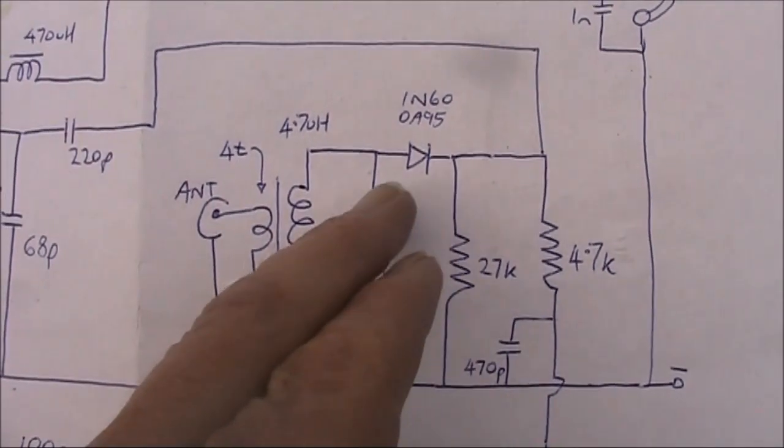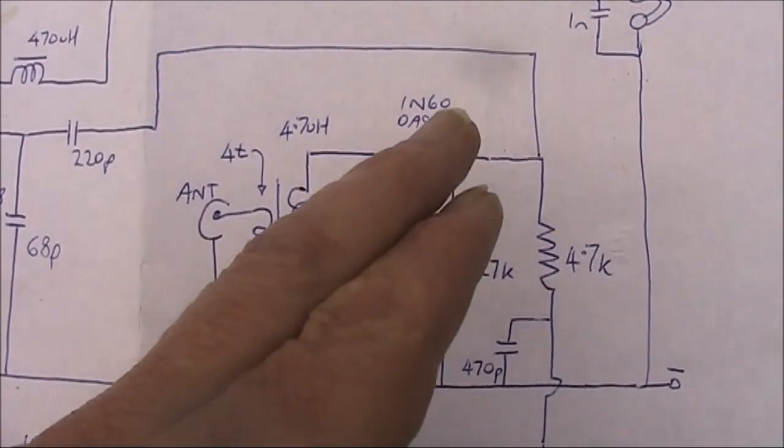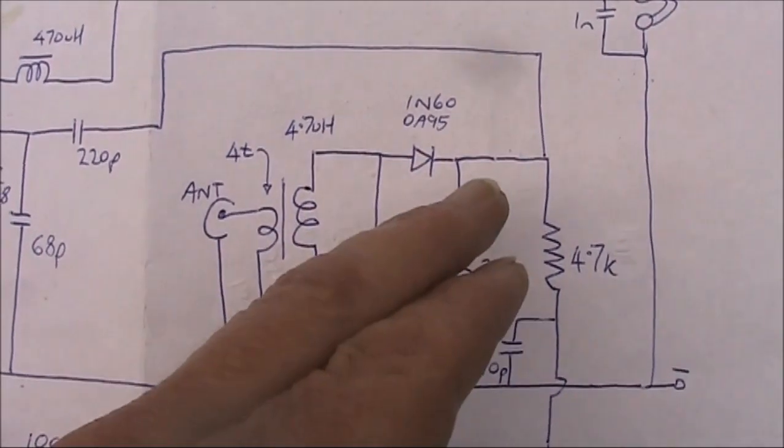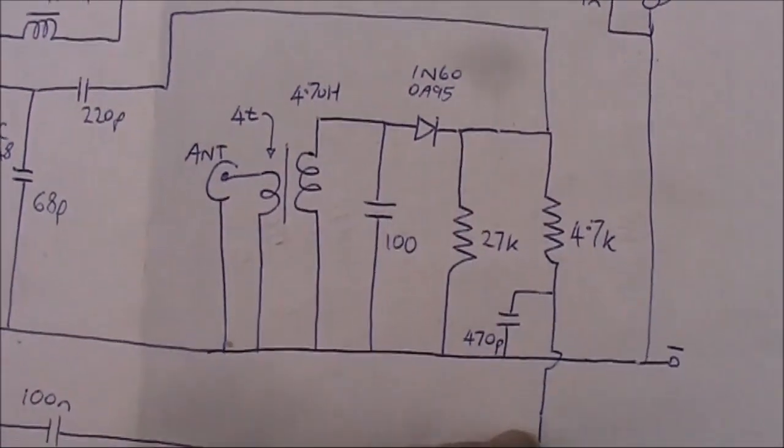Now that we've got the incoming SSB or CW signal mixing with the local oscillator signal, our difference is in the audio range, which is then fed,